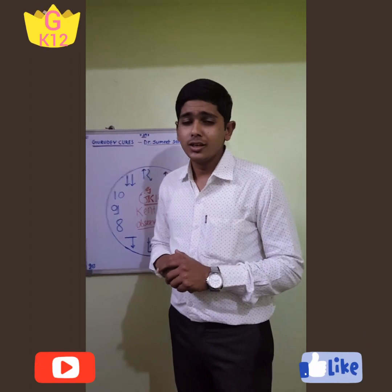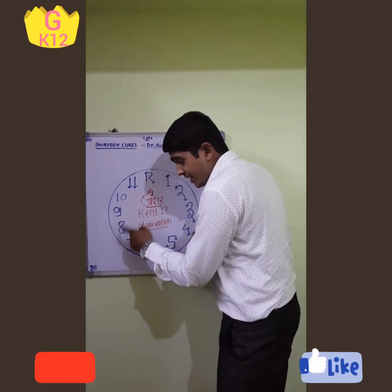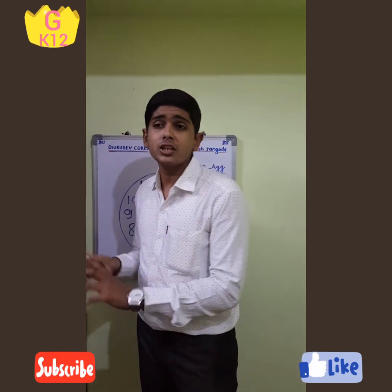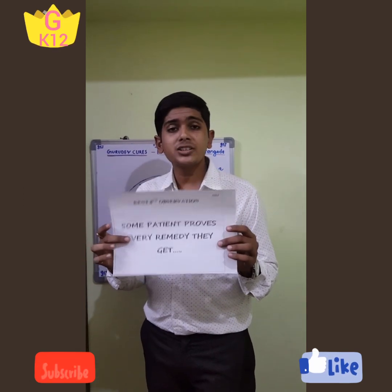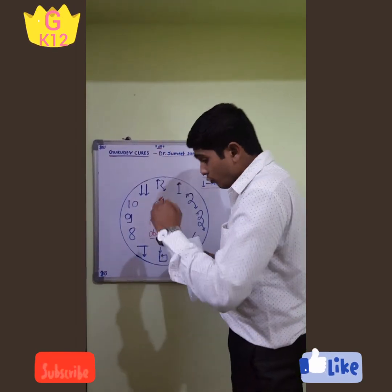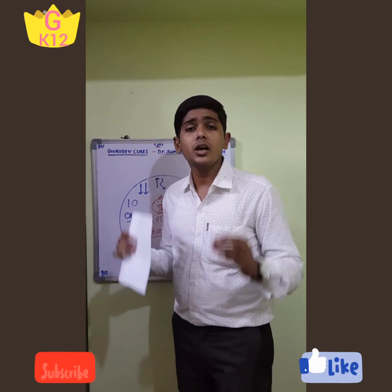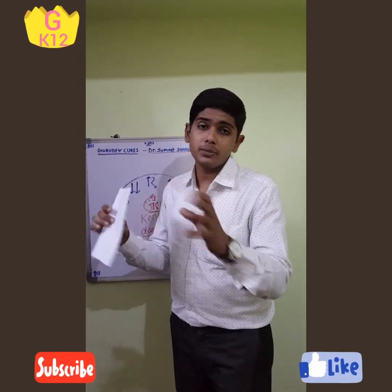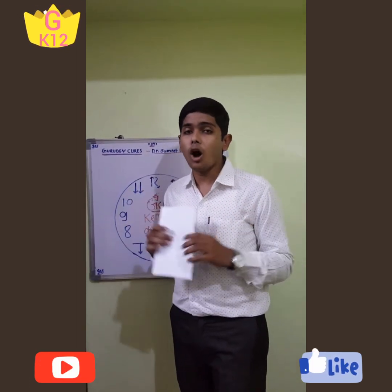The eighth observation is the most dramatic. Just like the number eight, where we don't know about start and end, in the eighth observation we don't know what the patient will show us after prescription. Some patients prove every remedy they get. This observation is famously known as the observation of the idiosyncratic patient — whatever medicine we give, each and every medicine will be proved by the patient, who will come back showing all the signs and symptoms of that remedy.